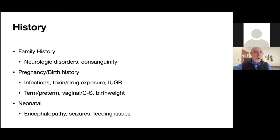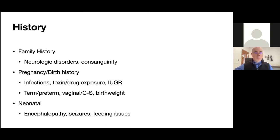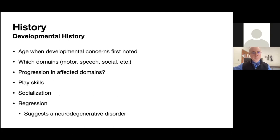Regarding the postnatal course, we ask: were there seizures, feeding issues, temperature issues, or encephalopathy? More specifically, when going over the developmental history, the first thing I want to know is the age at which parents first noted concerns, and which domains are affected — motor, speech, social, ADL, or a global process — and whether there are any concerns for developmental regression.